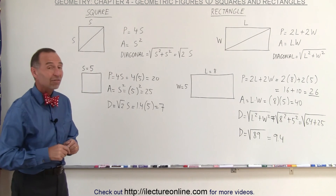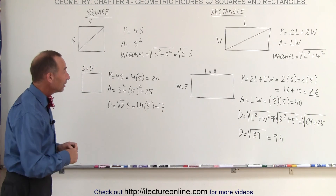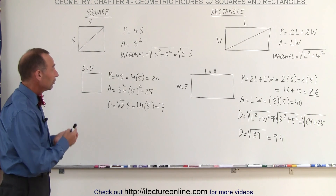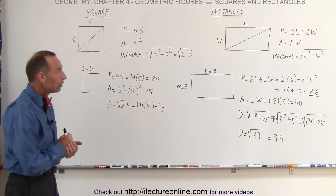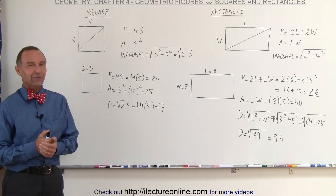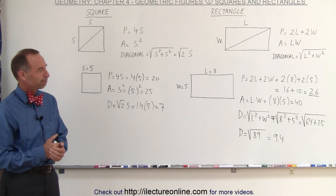And that's how we find the perimeter, the area, and the diagonal of both the square and the rectangle.